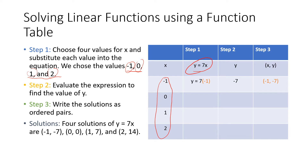Step 2 is to evaluate the expressions to find the value of y. So in step 2 we are going to evaluate the expression and solve for y, given the x that we have randomly chosen. So here we have y equals 7, and then we're going to substitute negative 1 for x. So y equals 7 times negative 1, that's negative 7. And the last thing we're going to do in our last column is write our two values — our x value and our y value — as a relation. So we have negative 1 and negative 7.